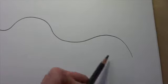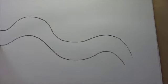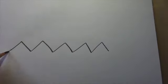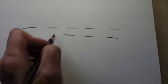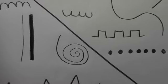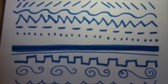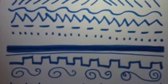A curved line or wavy line, dotted, zigzag, dashed, thin, or thick. Lines come in so many different ways. How many ways can you see?